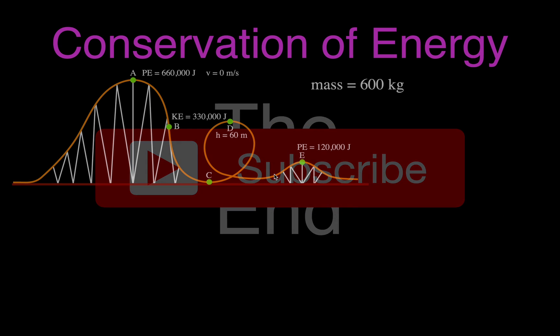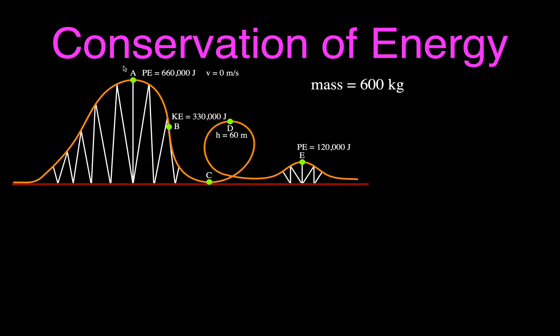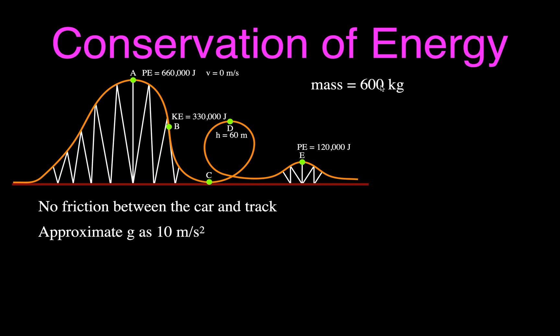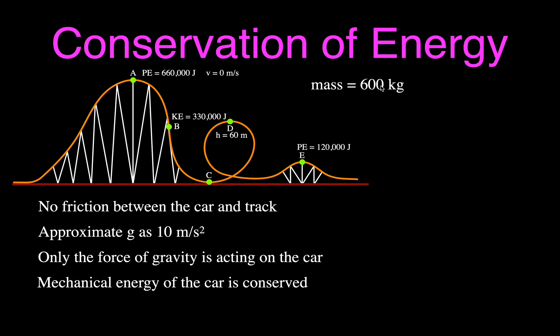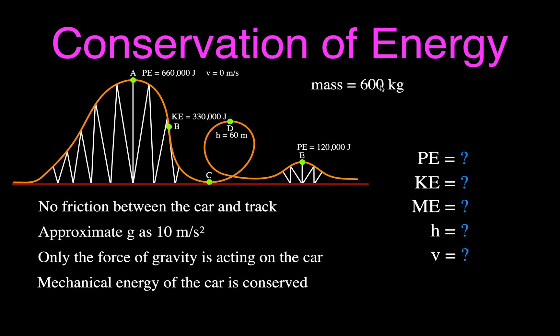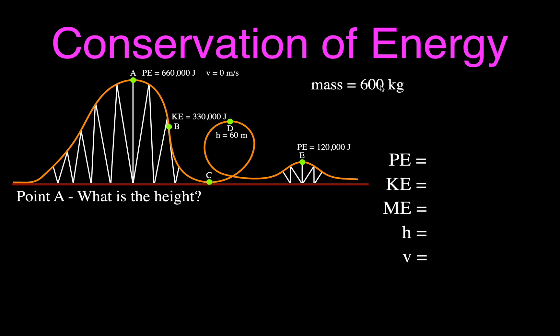Now we move on to our roller coaster example. For the roller coaster, the potential energy at the top is 660,000 joules. We're not given the height but will calculate it. The roller coaster car has a mass of 600 kilograms. We use the same conditions: no friction, g approximated as 10, gravity is the only force acting. Therefore mechanical energy is conserved — potential plus kinetic equals mechanical — and the mechanical energy remains constant anywhere along the path. We'll calculate potential, kinetic, mechanical, height, and velocity at points A through E.